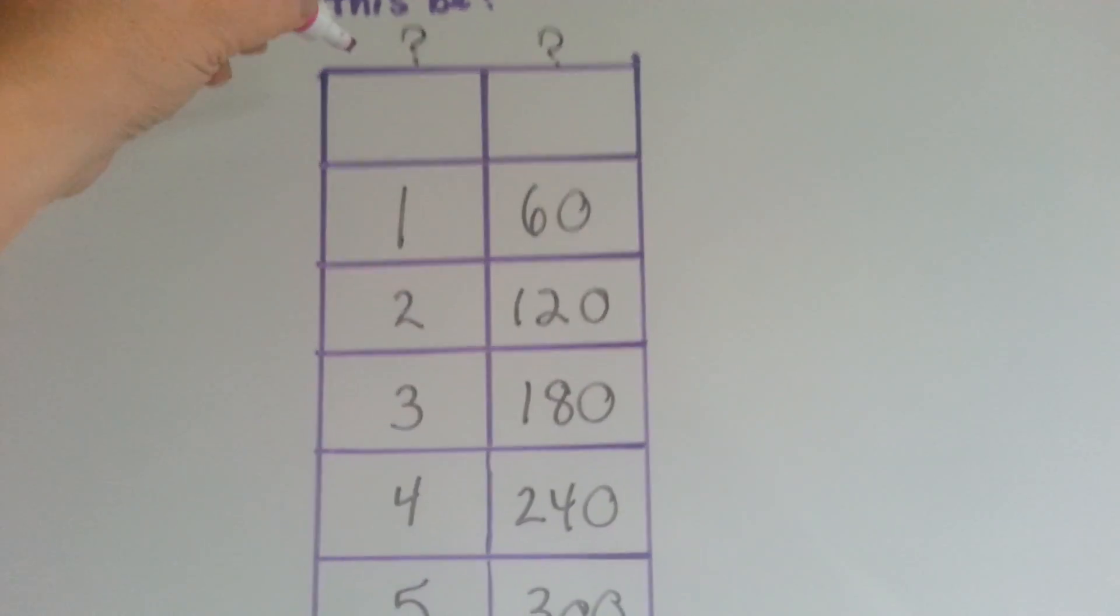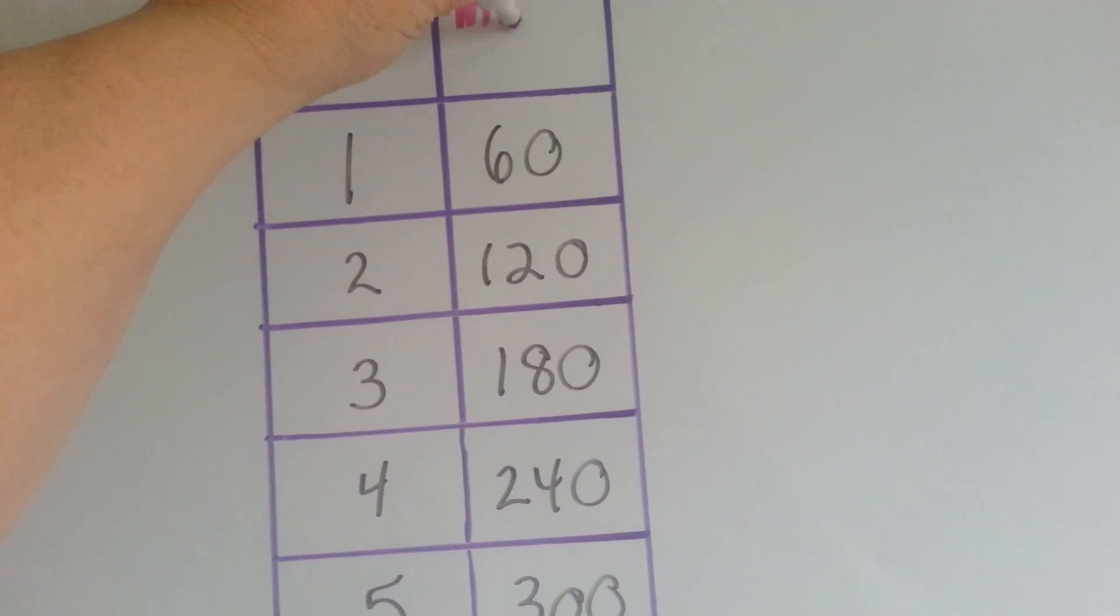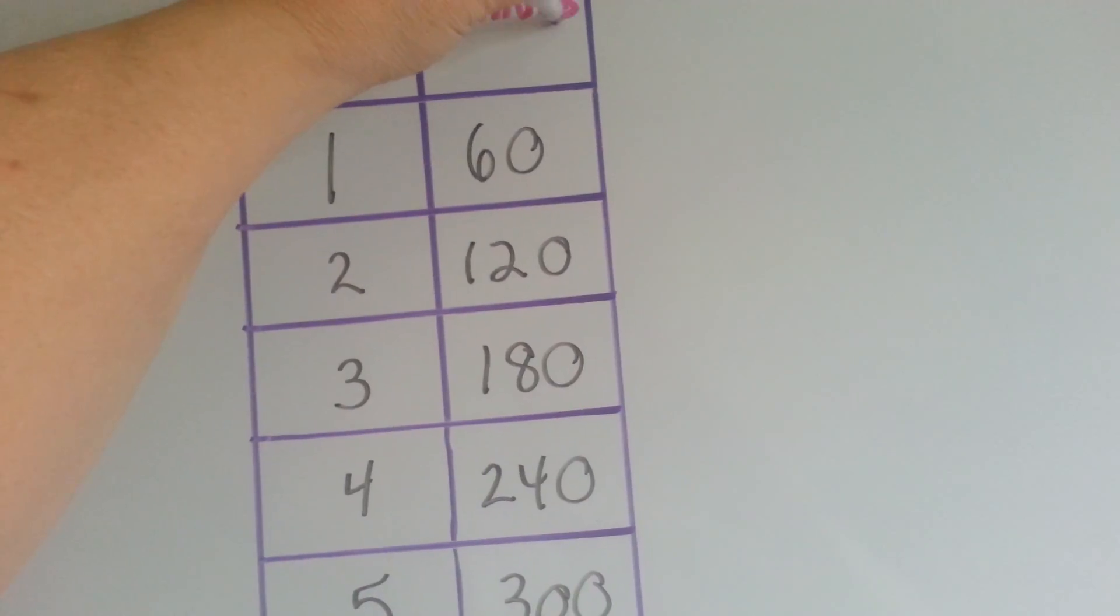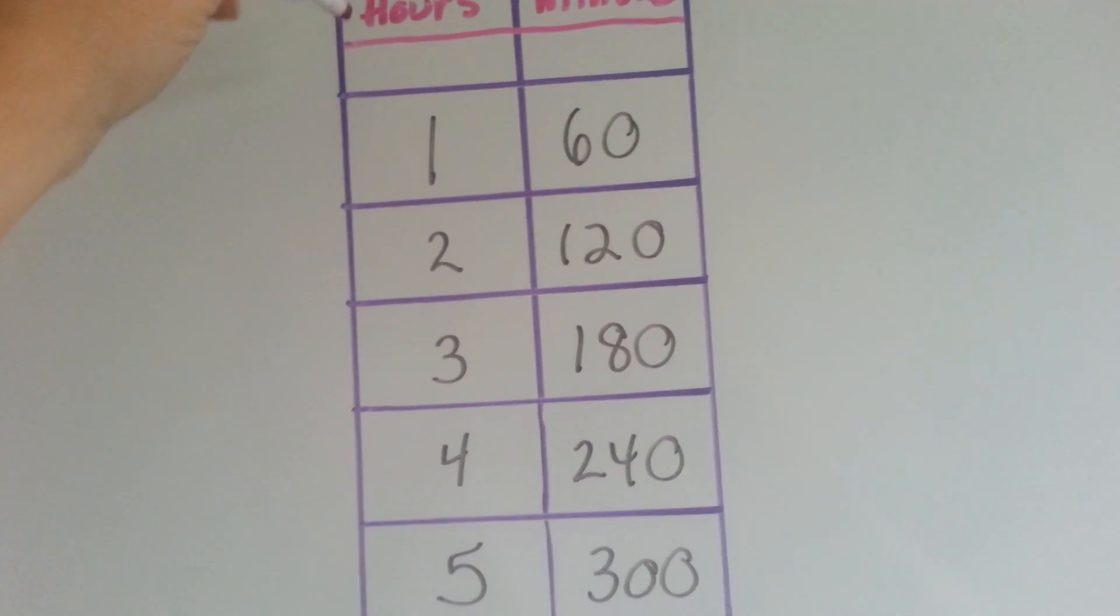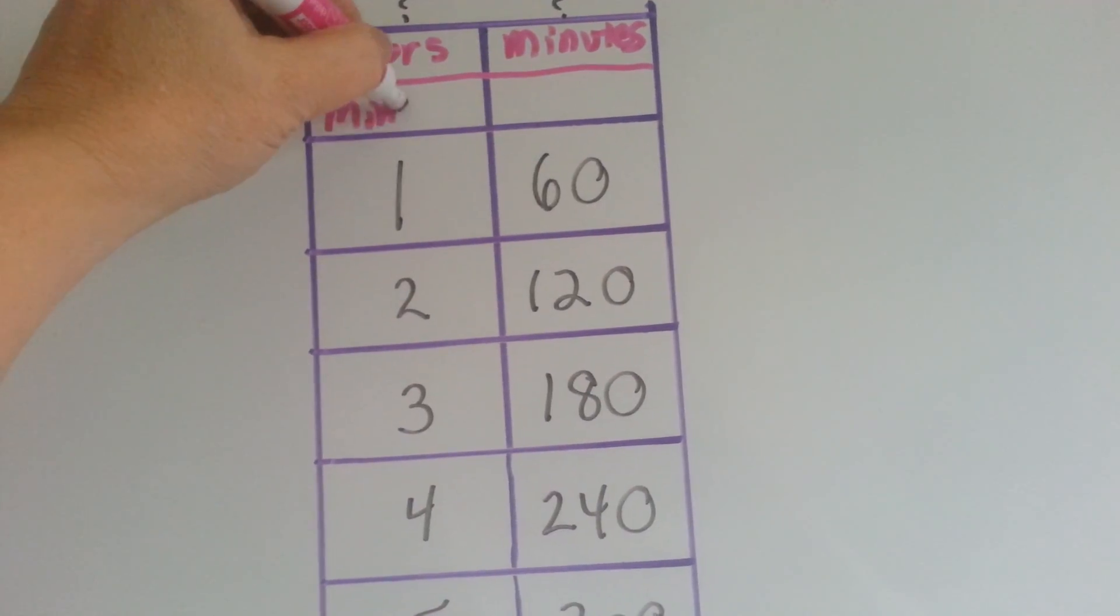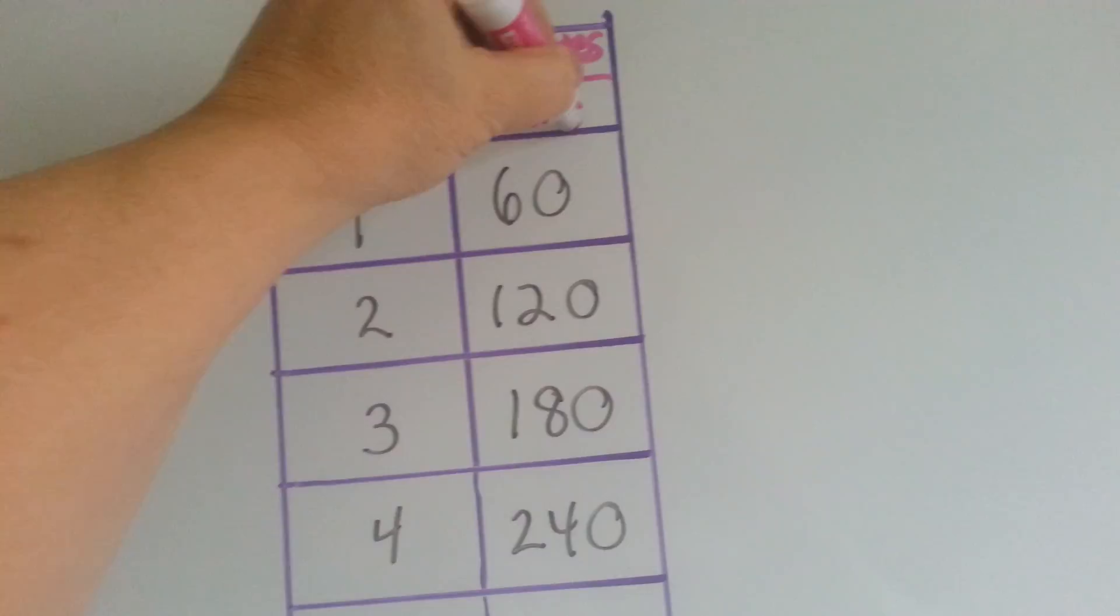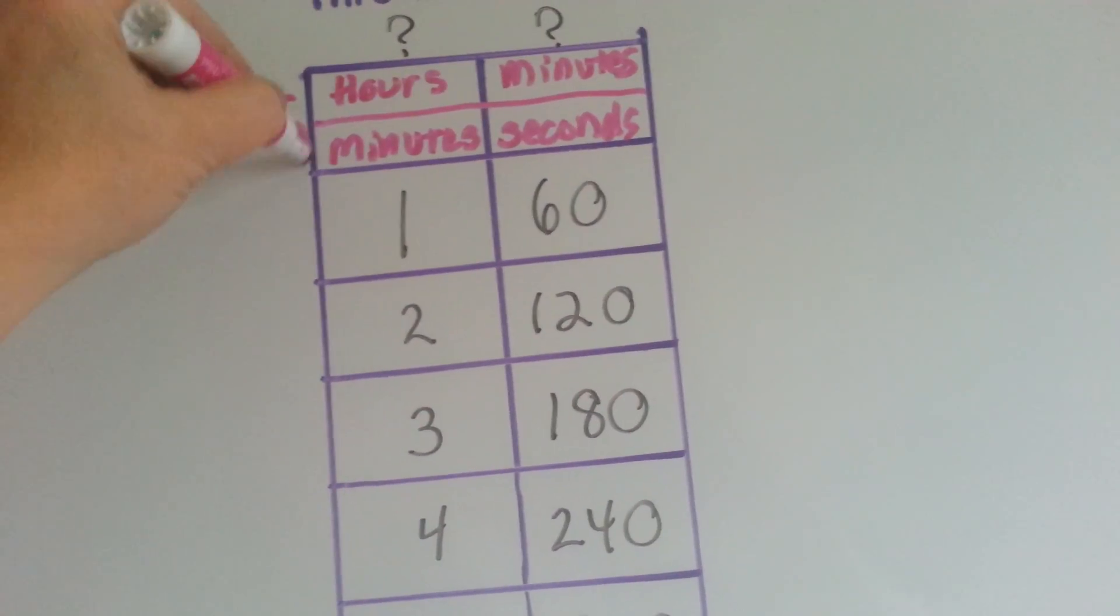If you said that this is hours and this is minutes, you'd be right. But we also could have said that this is minutes and this is seconds, right? It could have been either one of these.